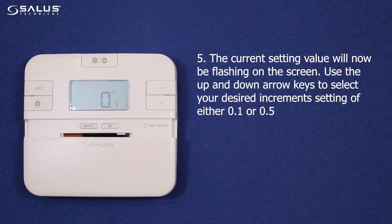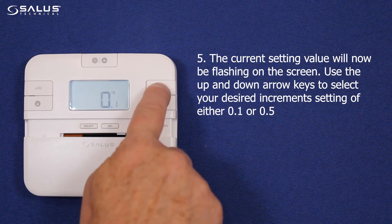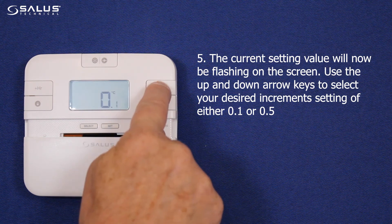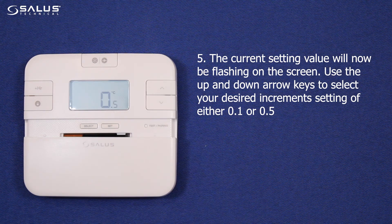Step 5. The current setting value will now be flashing on the screen. Use the up and down arrow keys to select your desired setting of either 0.1 or 0.5.